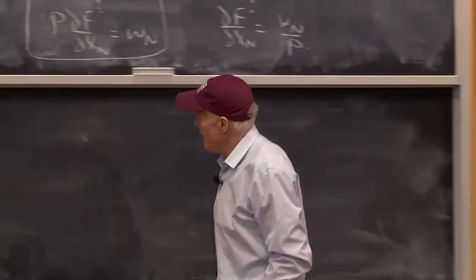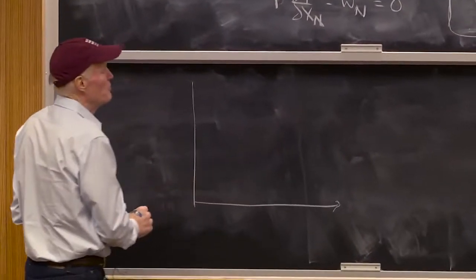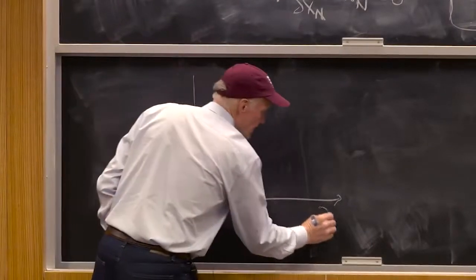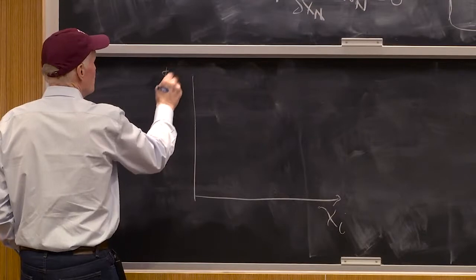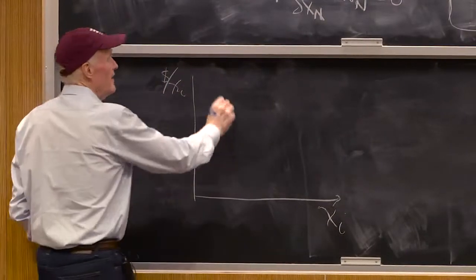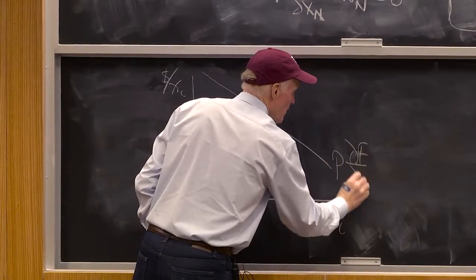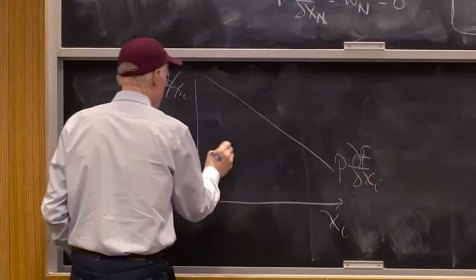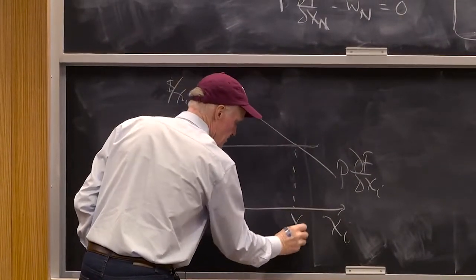Another way to look at it, and this is going to be a helpful way to think about the world, is you can also interpret those equations as saying if I put xi on this axis and dollars per unit xi on that axis, I can think of p times partial f partial xi. This is wi, and this being xi star.